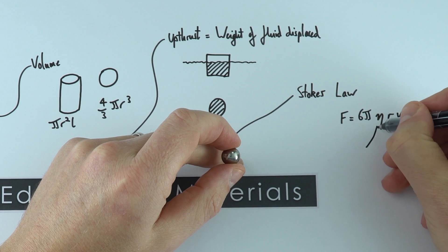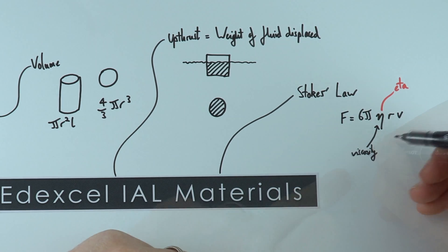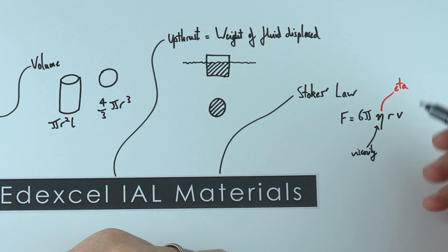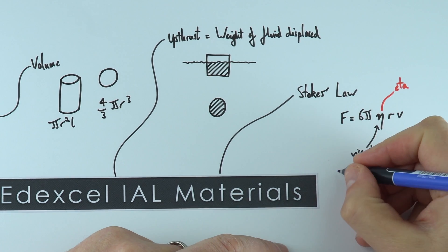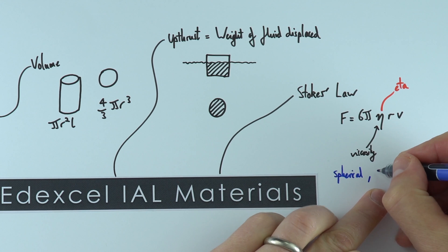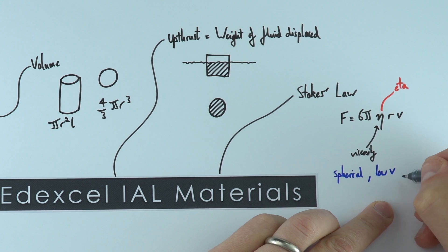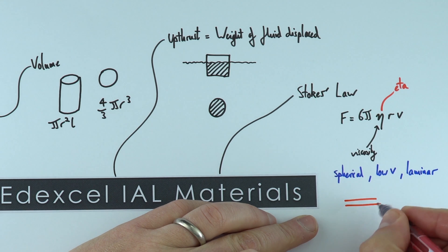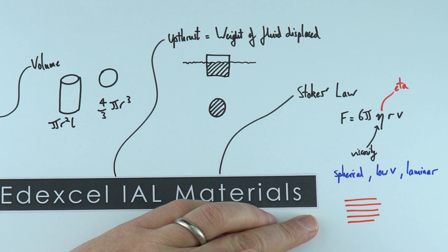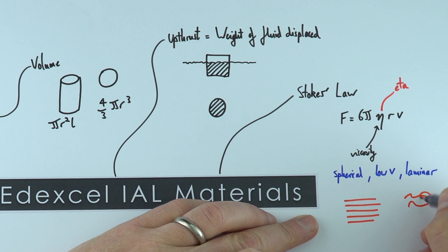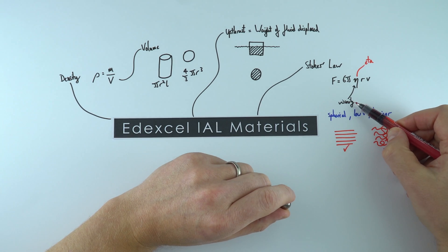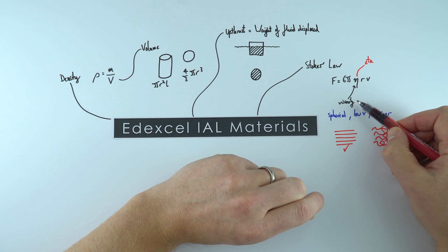Eta, this Greek letter, is the viscosity — really a measure of the stickiness of the liquid. Something like thick oil is going to be a lot more viscous than something like water. Stokes' law applies to spherical objects traveling at a relatively low velocity, and also what we have is laminar flow — things moving in an ordered way through the fluid, as opposed to turbulent flow which is difficult to model. Finally, the viscosity of the liquid also depends on temperature; often when something is warmed up its viscosity decreases.